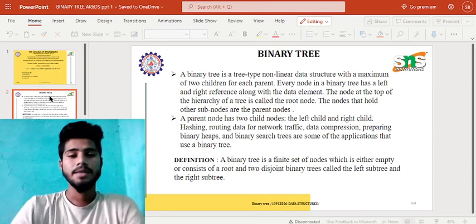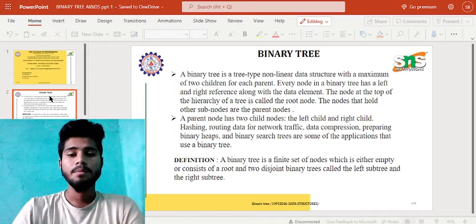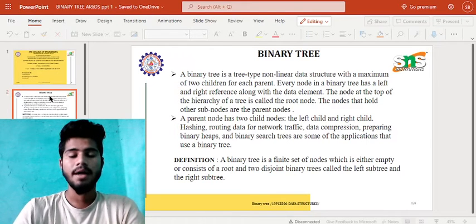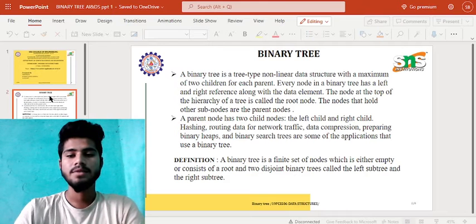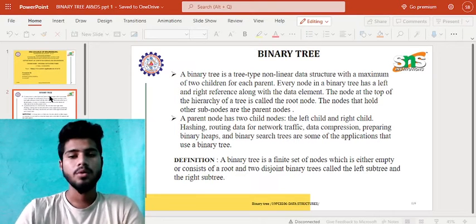First of all, Binary Tree. A binary tree is a tree-type non-linear data structure with a maximum of two children for each parent. Each node in a binary tree has a left and right reference along with data elements. The node at the top of the tree hierarchy is called the root node.